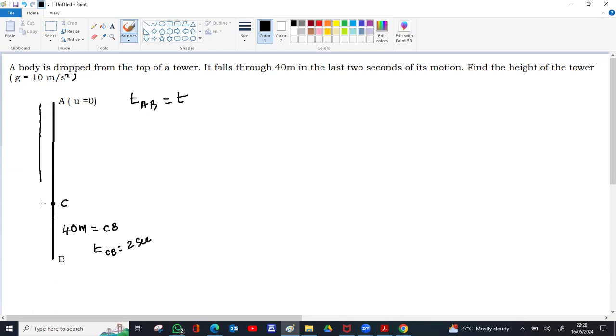Still here, this is two seconds, this is total t seconds. So A to C will be two seconds less compared to that, so the time of A to C will be t minus two seconds.